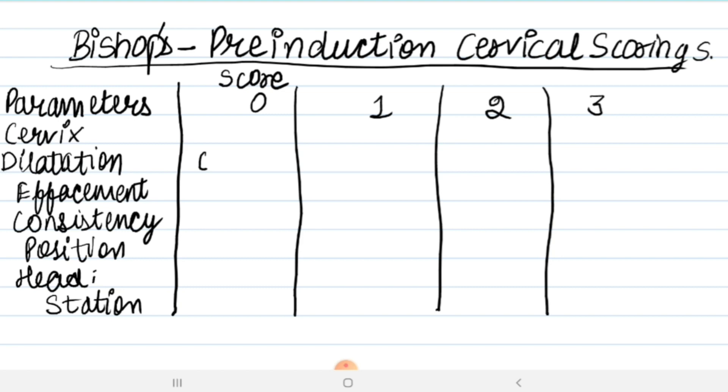When cervix is closed with no dilatation seen, the score is 0. When dilatation is 1 to 2 centimeters, the score is 1. If the dilatation is 3 to 4 centimeters, score is 2. And when dilatation is more than 5 centimeters, the score is 3.